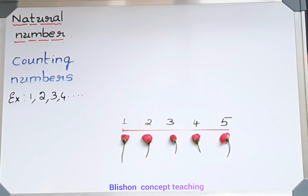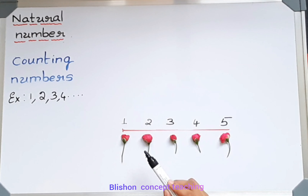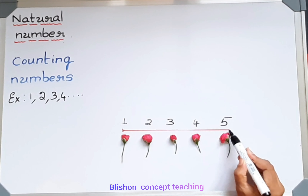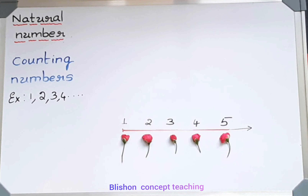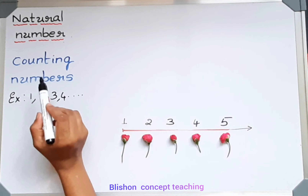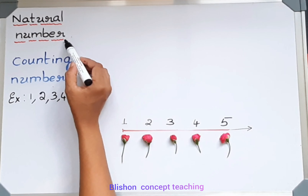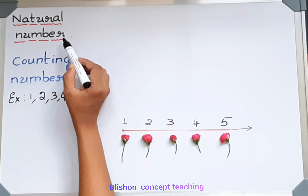If I go on keeping the flowers then it will increase. And you can count one, two, three, four, five, and so on. You can go on counting the flowers by using the numbers one, two, three, and so on. For these numbers we will say it as counting numbers or natural numbers.